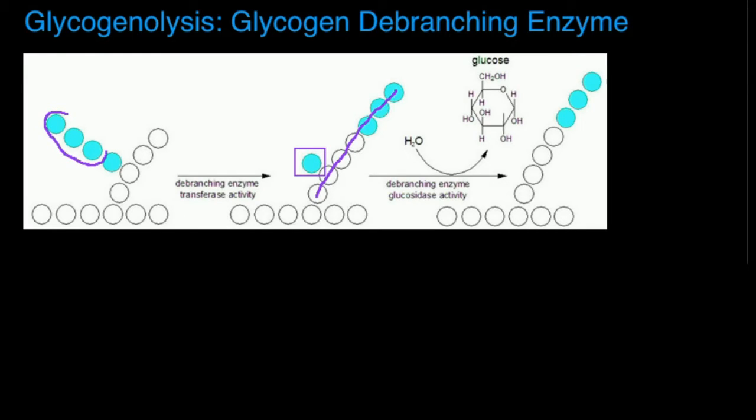When it gets down to a branch that's four glucoses long, the terminal three are then moved onto a longer chain nearby. That's the transferase activity. So you see these three blue glucoses moved over here.